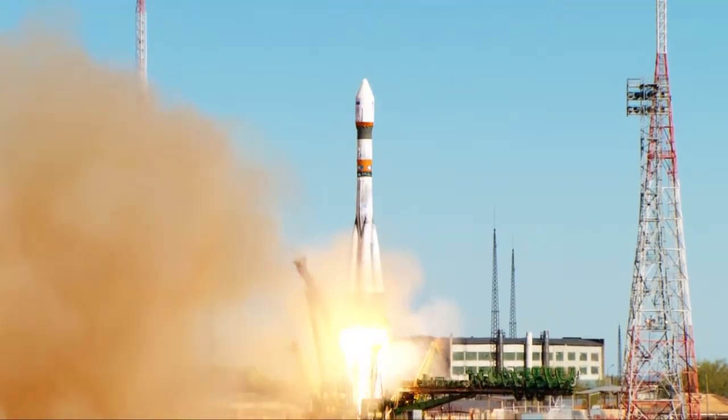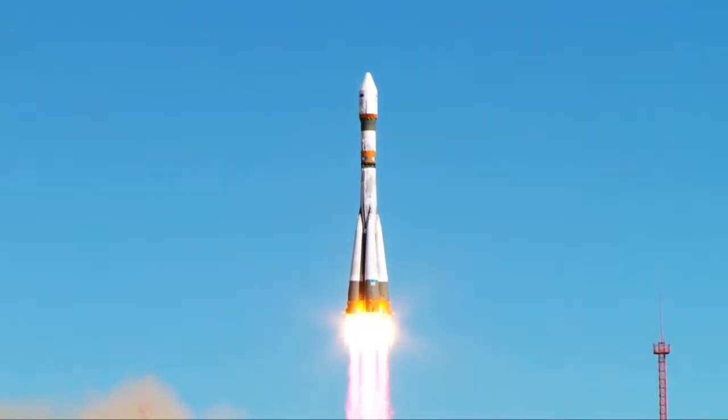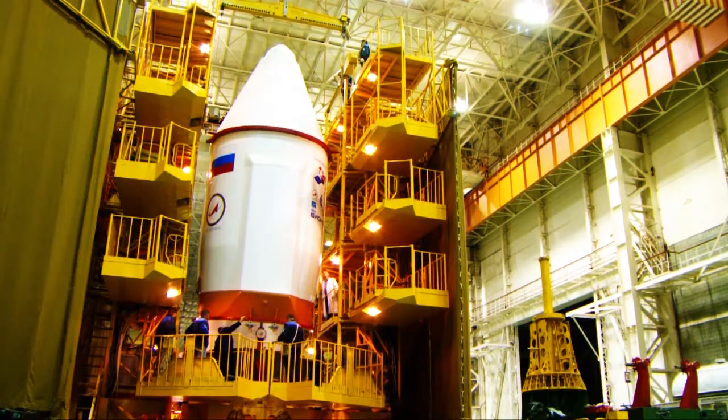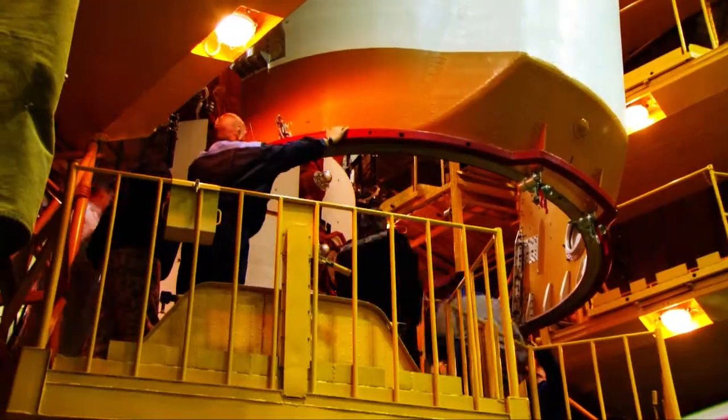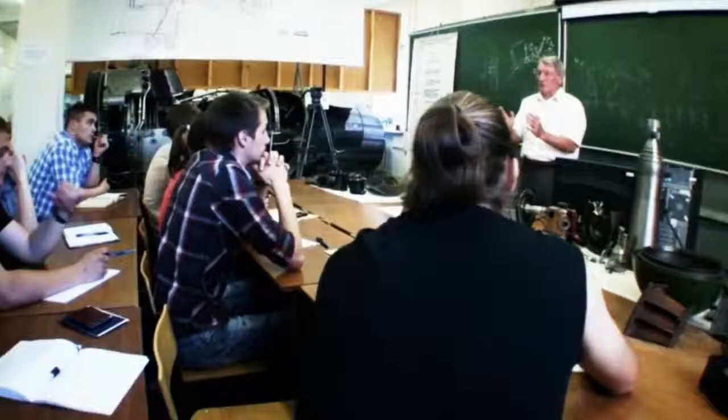The launch of the first EIST was a success. Two microsatellites of this type are currently functioning in circumterrestrial space. This allowed Samara State Aerospace University to become one of the few universities in the world having their own orbit group.